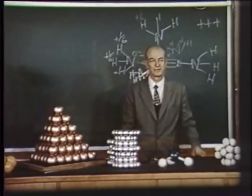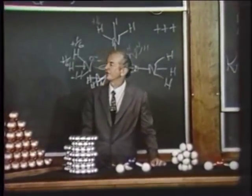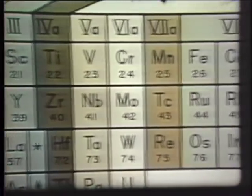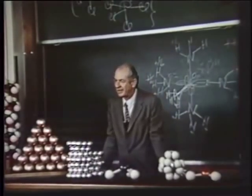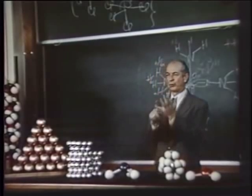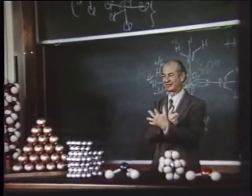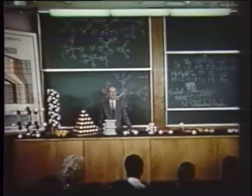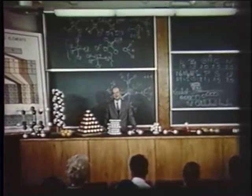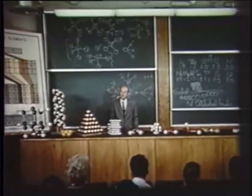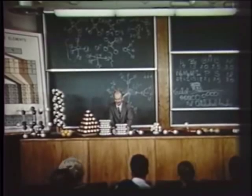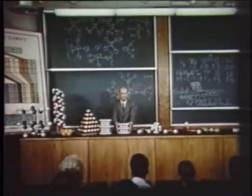The same sort of resonance of covalent bonds among a large number of alternative positions occurs in other elements. In the metals potassium, calcium, scandium, titanium, vanadium, chromium, the properties correspond to the idea that one through six electrons form bonds by each atom, resonating around positions connecting the atom with neighboring atoms. The malleability, ductility, and ability to conduct electric current can be understood in terms of this resonance.